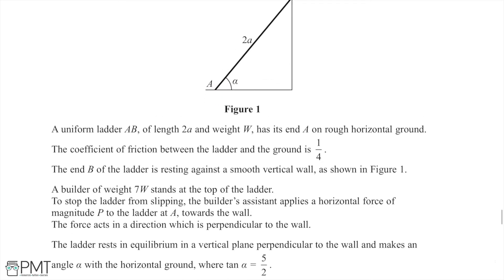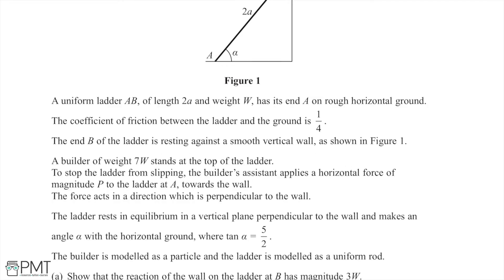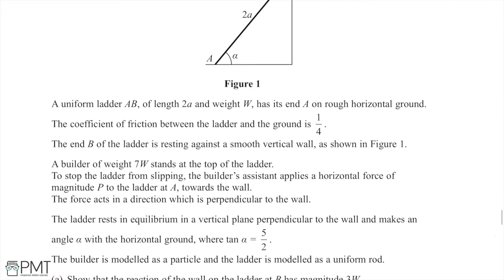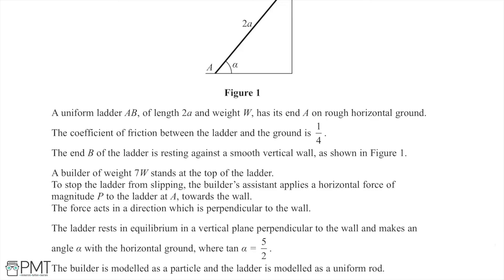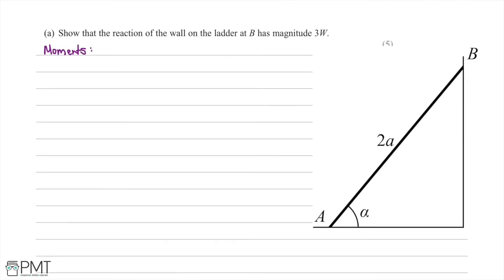The ladder rests in equilibrium in a vertical plane perpendicular to the wall and makes an angle alpha with the ground, where tan(alpha) = 5/2. The builder is modelled as a particle and the ladder is modelled as a uniform rod. In part (a) we're asked to show that the reaction of the wall on the ladder at B has magnitude 3w.